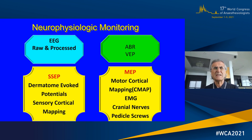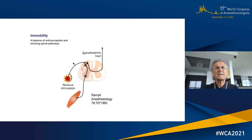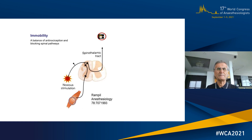Immobility is part of the anesthesia component. When a patient moves during surgery, it is due to a reflex, not because the patient is awake. Stimulation occurs in the periphery, travels to the spinal cord, and goes to the muscle as a reflex — the patient is asleep and doesn't know what's going on.